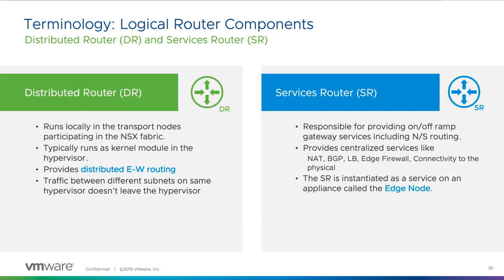Question: are the universal logical routers (ULRs) deprecated in NSX-T? Yes. All of the universal components and functions that were in NSX for vSphere — as in the construct of that idea — are no more. In 2.4/2.5 today, we have a methodology for doing active-active and active-standby in split sites or disparate sites. We have a methodology for doing the failover of that, but it's not the same as the universal objects you'd create in NSX for vSphere. As I said in the first episode: anything from the NSX for vSphere world, knowledge-wise — just throw it away and try to relearn this stuff.